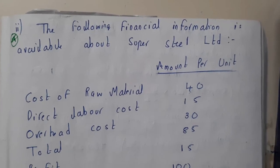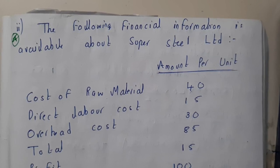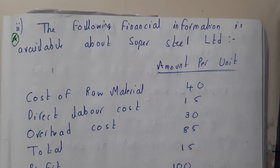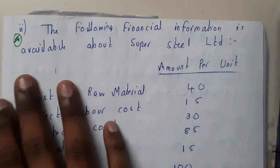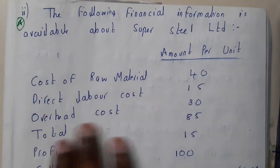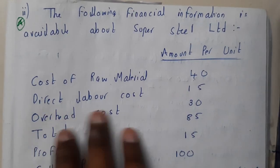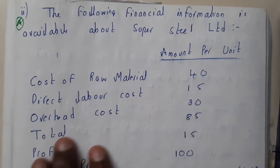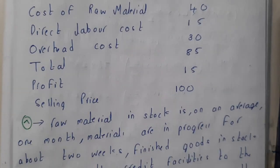Hello guys, we are back with our next lecture. Let us go through one more problem on working capital. This working capital concept is really easy, but these kinds of problems can be confusing. So the following financial information is available about Super Steel Limited: raw material cost per unit is 40, direct labor cost is 15, overhead is 30, total cost is 85, profit is 15, and selling price is 100.